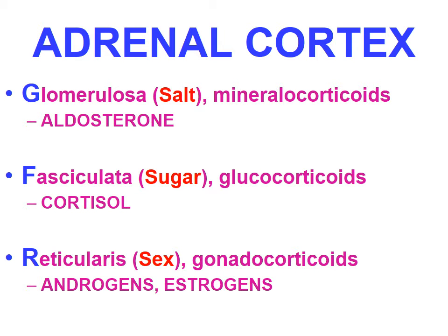The adrenal cortex is further divided into three zones: glomerulosa, fasciculata, and reticularis — like GFR. Glomerulosa secretes salt and mineralocorticoids, mainly aldosterone. Fasciculata secretes sugar, like glucocorticoids and cortisol. Reticularis secretes sex hormones like androgens and estrogens.